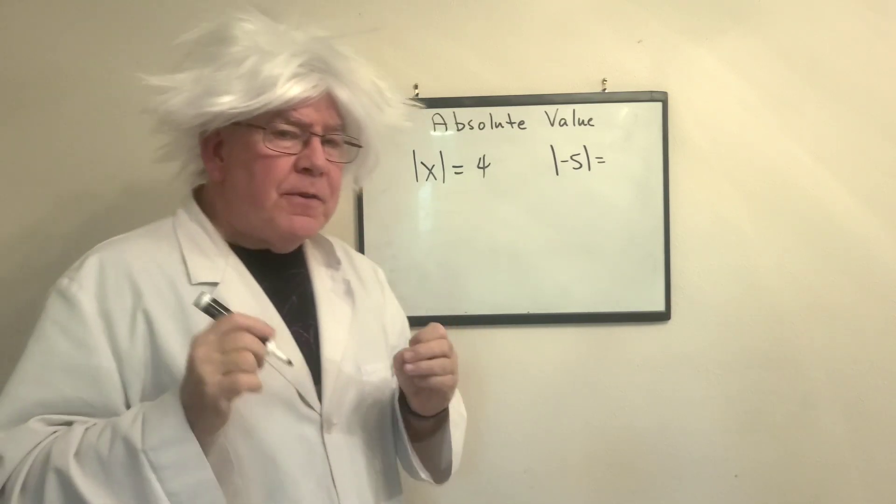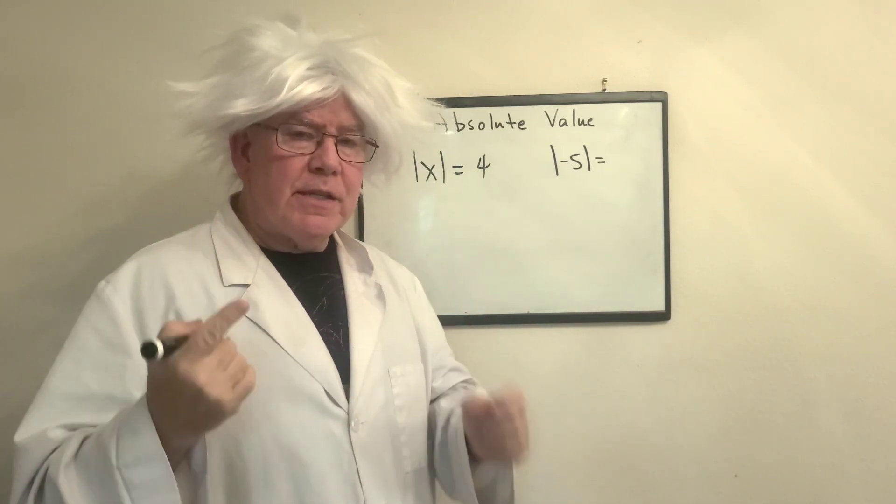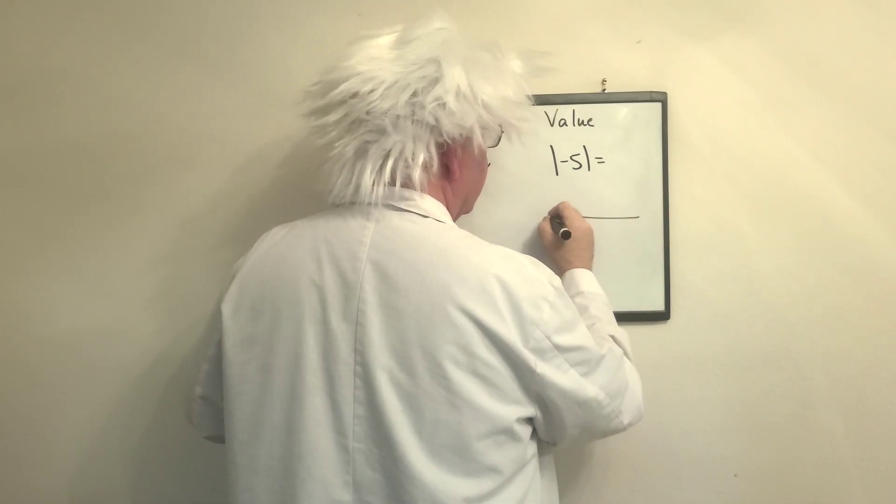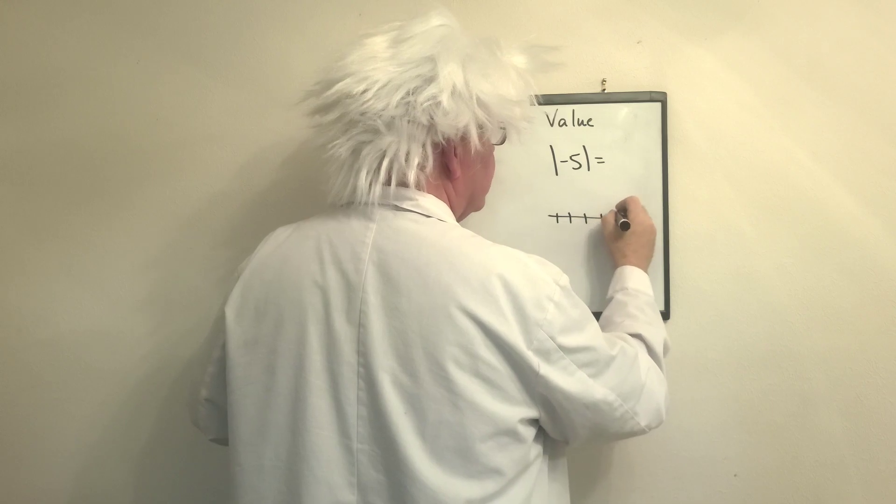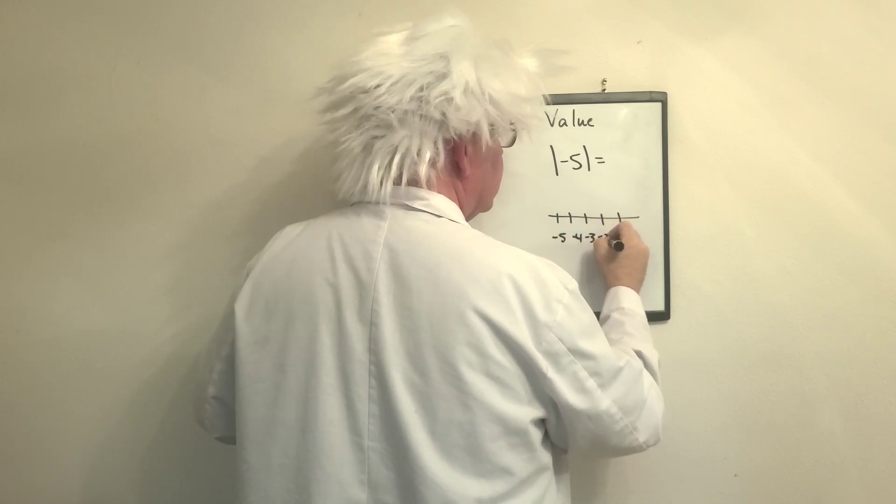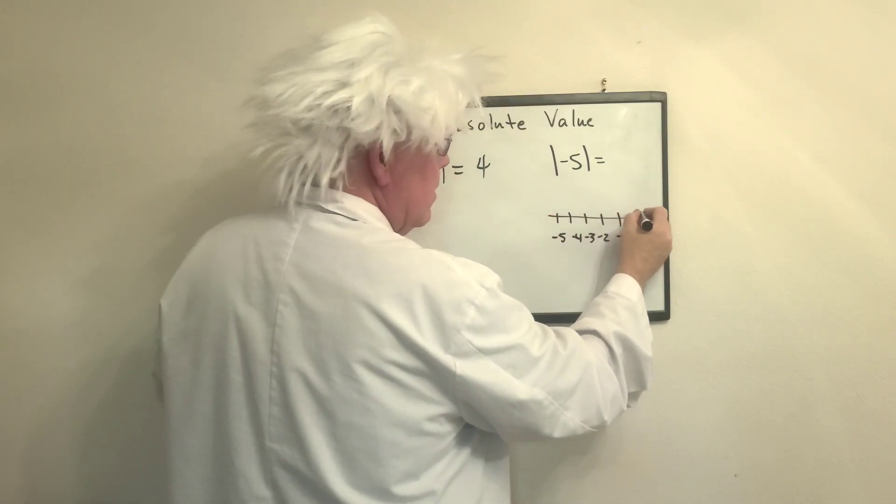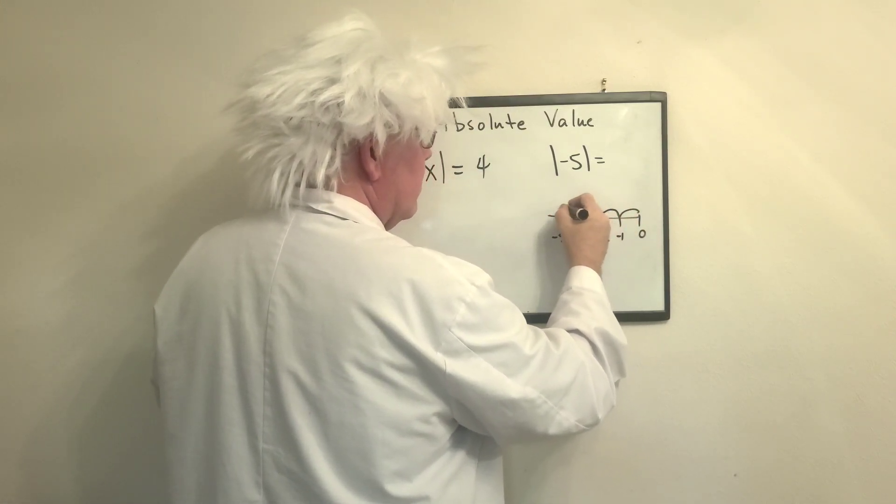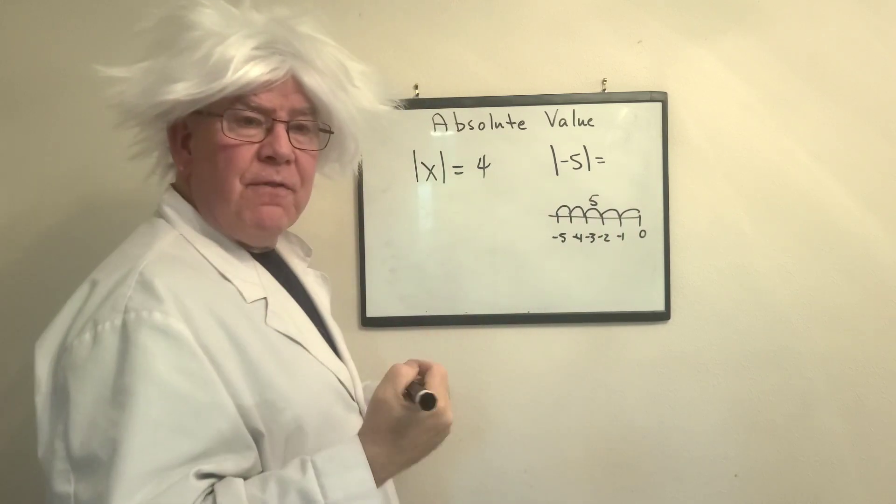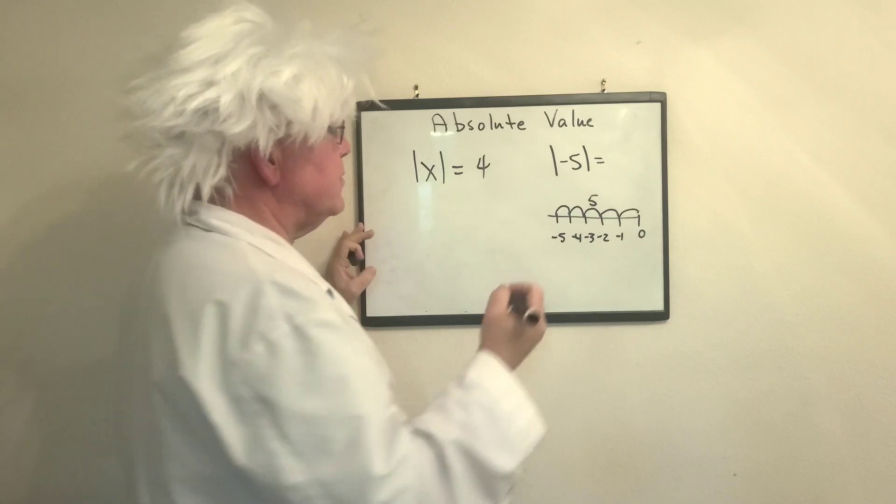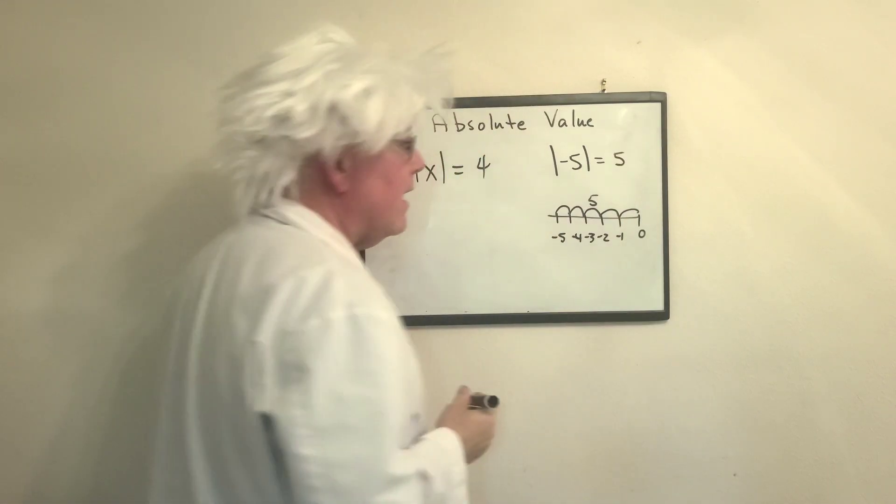Well, the definition of absolute value is the distance a number is away from zero on the number line. So this is how far. We say it is 1, 2, 3, 4, 5, but we don't say negative 5, we say 5. So an absolute value will always be a positive answer. So it's 5.